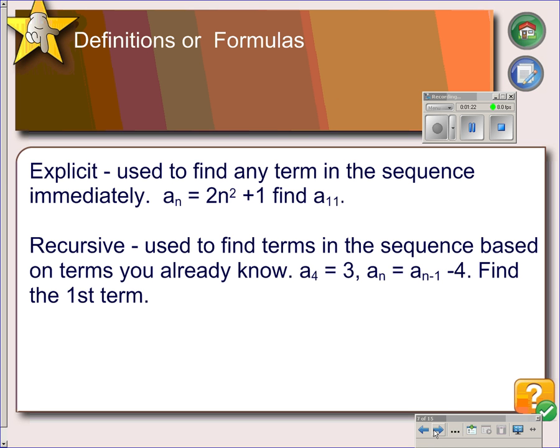Once you have a sequence, then what you would want to do is write a formula for it, and there are two types of formulas: the explicit and the recursive formula. In the explicit formula, you would have a formula where you're looking for a certain term in the sequence, and to calculate that you just plug that term number in. So if we wanted to find the 11th term in the sequence, we would just plug 11 in for n.